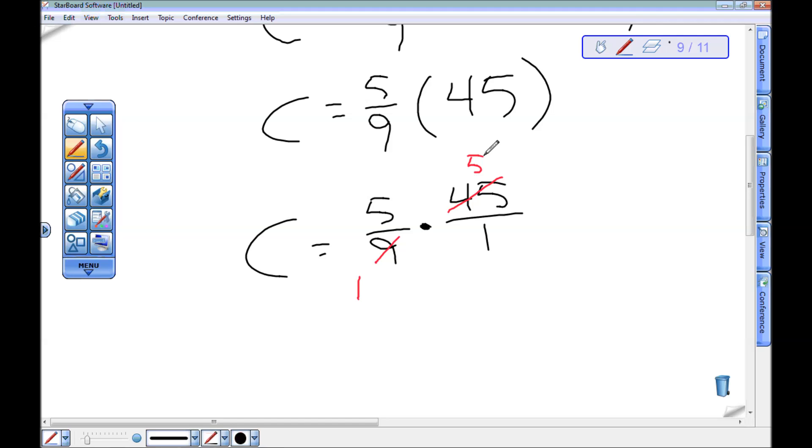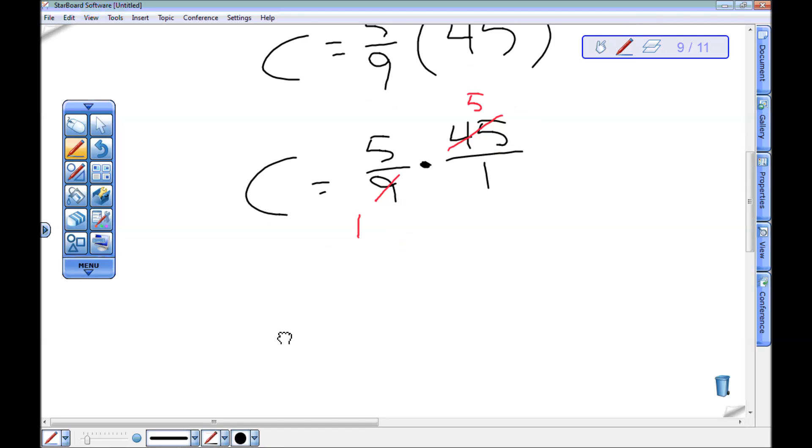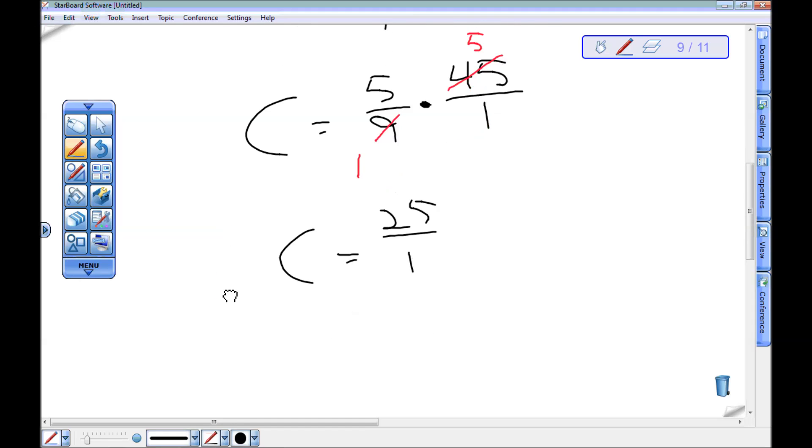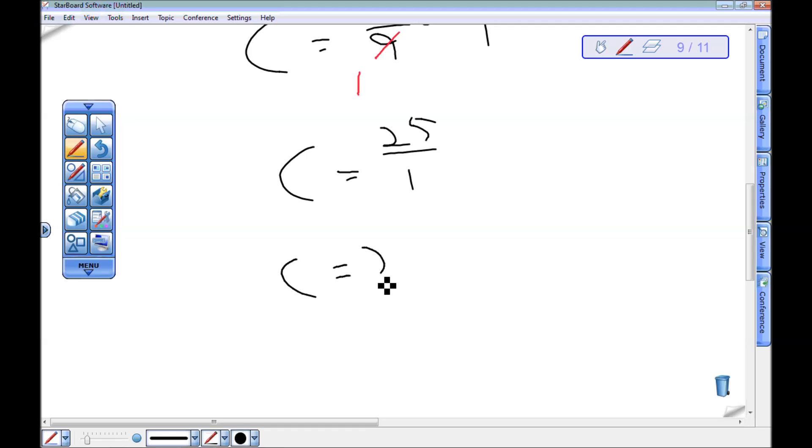I can divide this by 9 to get 1 and divide this by 9 to get 5. Now I'm taking 5 times 5, which is 25, over 1 times 1, which is 1, and 25 divided by 1 happens to be 25.